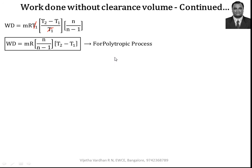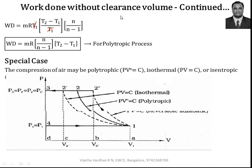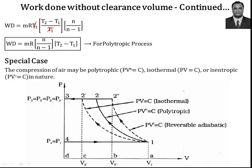This expression MR·(T2 − T1)·N/(N − 1) is the work done for a single stage reciprocating compressor following a polytropic process only, neglecting clearance volume — it is not applicable to other thermodynamic processes. In thermodynamics we also have isothermal and adiabatic processes, and the process must follow polytropic, isothermal, or isentropic process to complete a cycle.